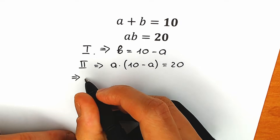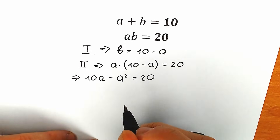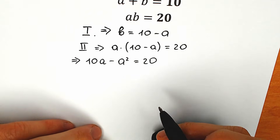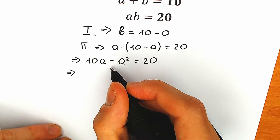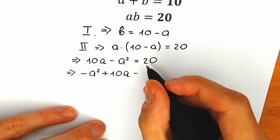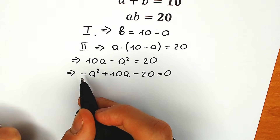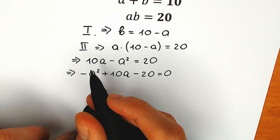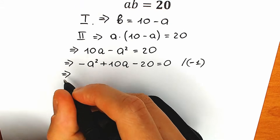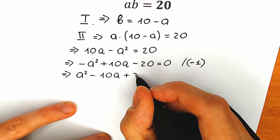Let's multiply a by the parenthesis. So we have 10a minus a squared equal to 20. This is a quadratic equation, but we prefer a different order — a squared first, then the term with a, then the constant. So we rearrange: minus a squared plus 10a minus 20 equals zero. And the last tricky move — we multiply by minus one to get a positive leading term: a squared minus 10a plus 20 equals zero.